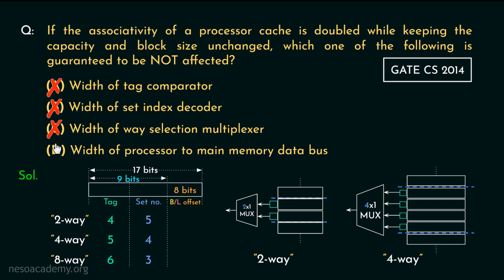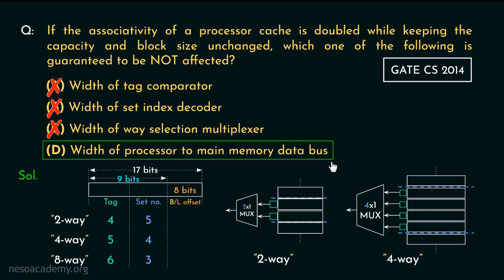This leaves us with option D, which states the width of the processor to main memory data bus — and yes, that is the correct option. Till now we haven't studied about the data bus and its properties, and we will definitely study that in a different lecture. But for now, we got the correct answer by selection by elimination: we eliminated all the wrong options and the right one was left alone. This is a smarter approach and becomes very handy while answering questions in competitive exams like GATE.